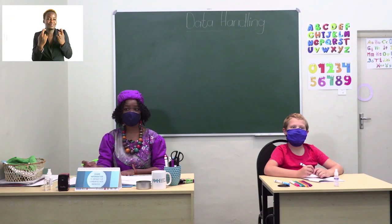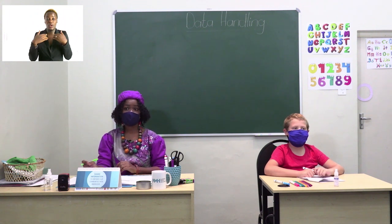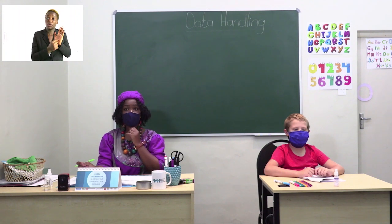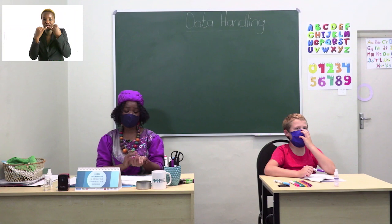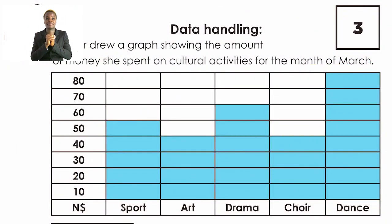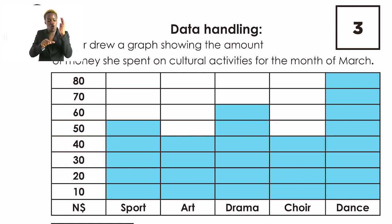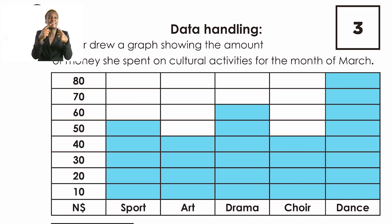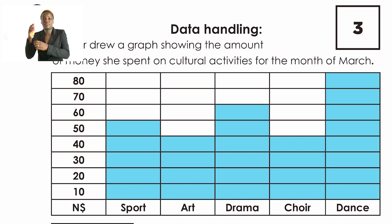Now we will focus on data handling. Data handling is showing and comparing information in graph form. Let's look at the graph. Ember drew a graph showing the amount of money she spent on cultural activities for the month of March. The title of this graph is 'Cultural Activities.' You can underline those words — that is the name given to this graph, written on top.